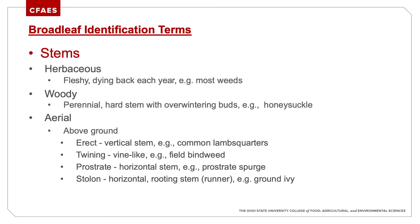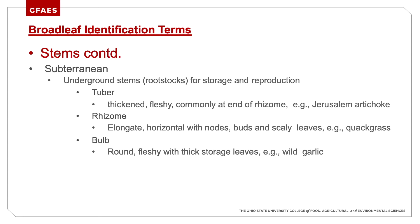Stems: is it a herbaceous stem, a woody stem, or an aerial stem? Subterranean or underground stems include rootstock for storage and reproduction, tuber, rhizome, or bulb — all great ID characteristics. Some plants we can get you close based on what's above ground, but sometimes you need to dig up a little bit so we can see what's going on underneath to make an exact identification.